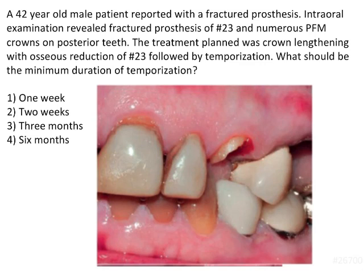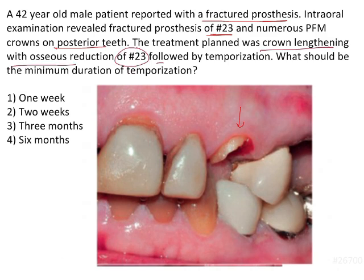This is a clinical case based question. A 42-year-old male patient reported with fractured prosthesis. Intraoral examination revealed fractured prosthesis with tooth 23, which is the canine as given in the image, and numerous PFM crowns on posterior teeth. The treatment plan was crown lengthening with osseous reduction for tooth 23, followed by temporization. What should be the minimum duration of temporization? Options are one week, two weeks, three months, and six months.